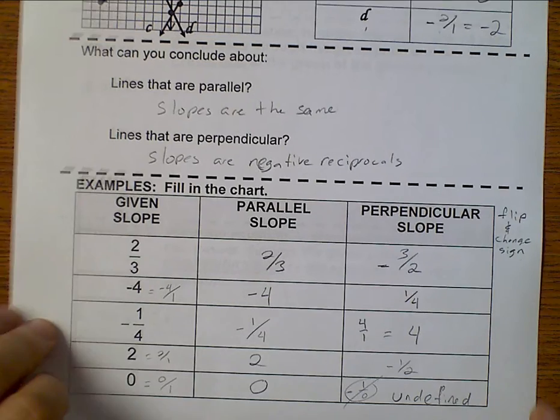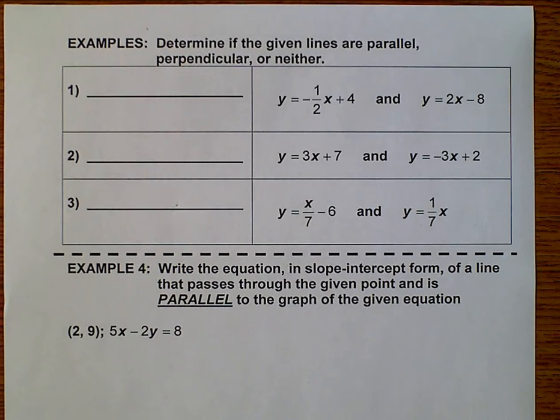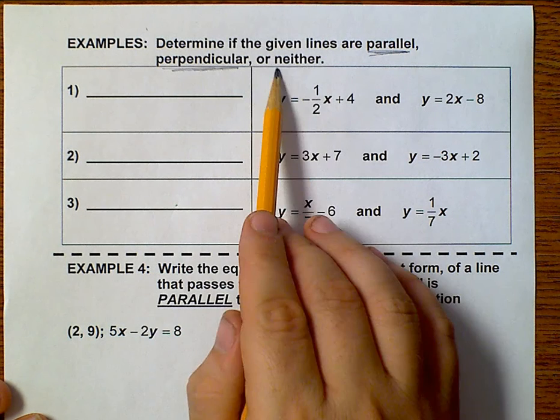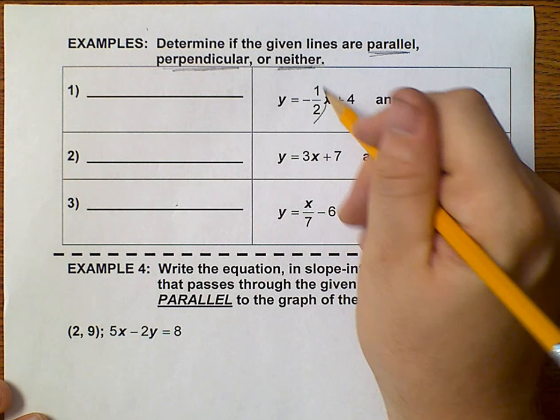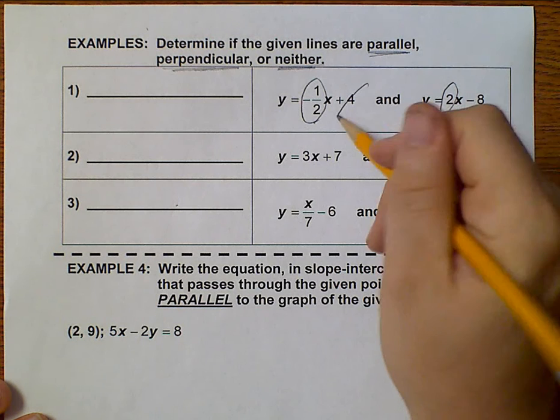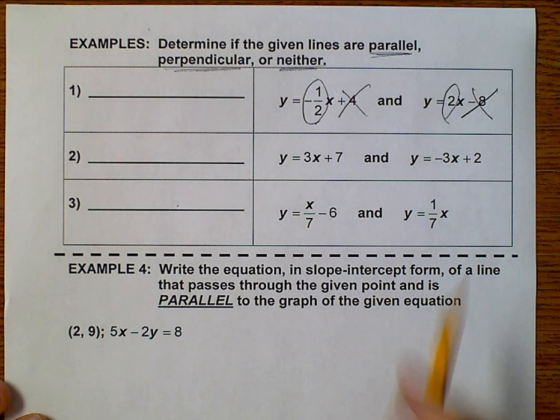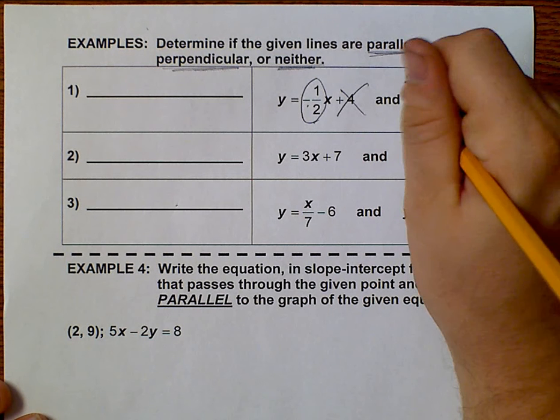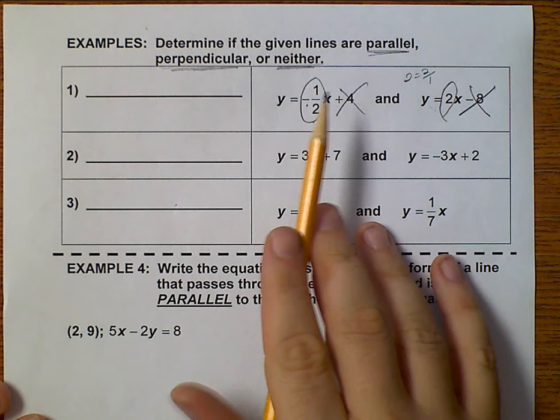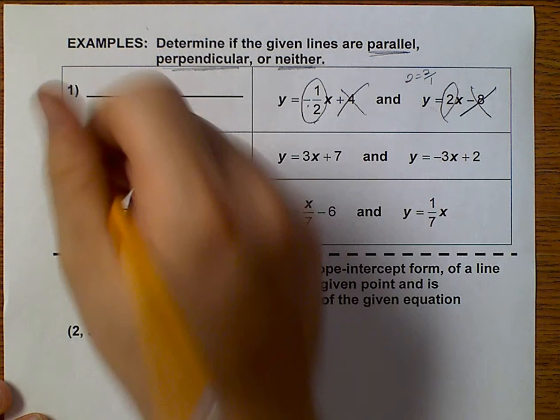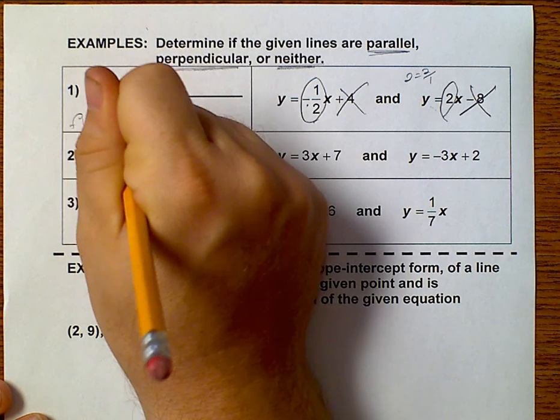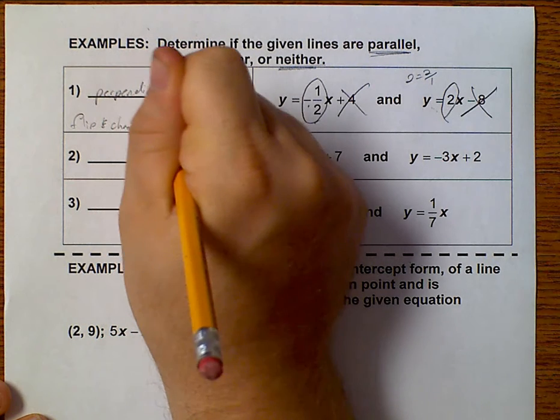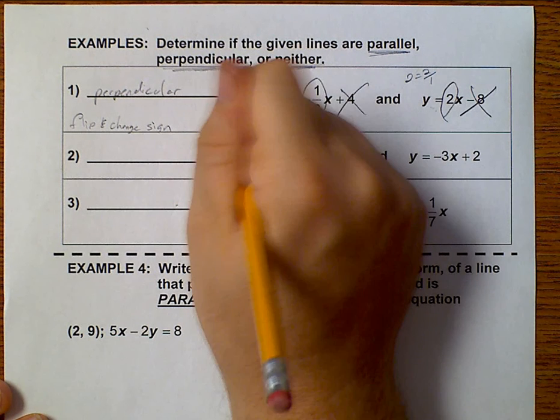Let's go ahead and look at some more examples. Here, I'm given equations of lines, and I'm needing to determine are they parallel, perpendicular, or neither. So all I care about are my slopes. I don't care about my b values. All I care about are slopes. And so this is negative 1 half and 2. I need to turn this into a fraction. 2 equals 2 over 1. To go from negative 1 half to 2, I have flipped it and changed the sign. That means that they are perpendicular. And the shorthand to write that is an upside-down capital T.